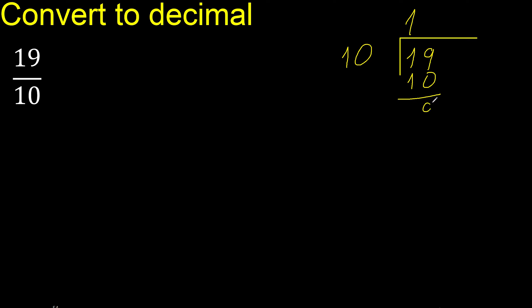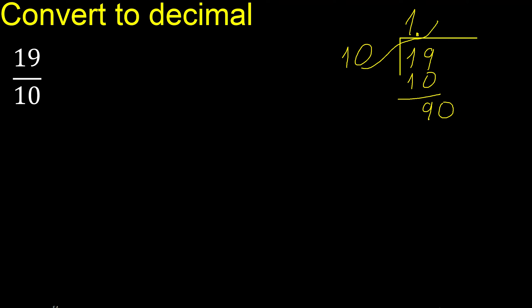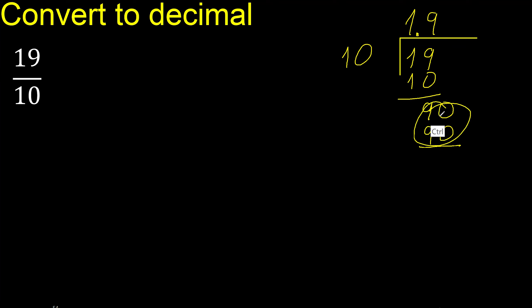Subtract to get 9. There is no digit to bring down, so complete with a 0 and add a decimal point. We now have 90. Multiply by 9 is exactly 90. Subtract to get 0, therefore we are finished.